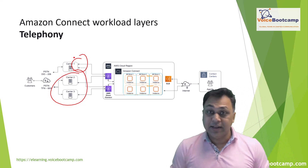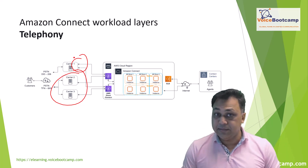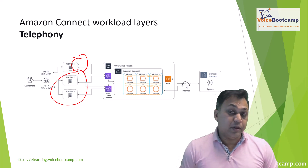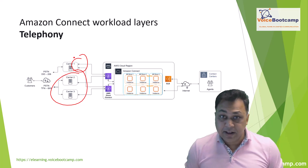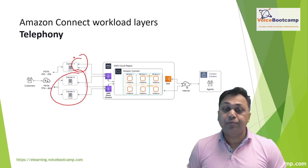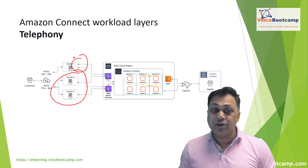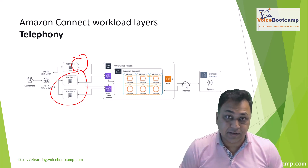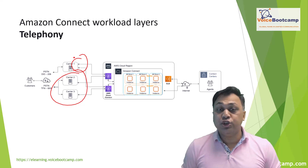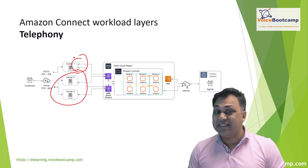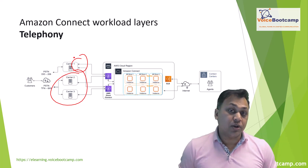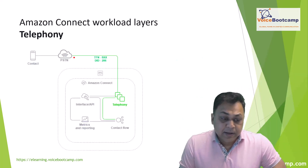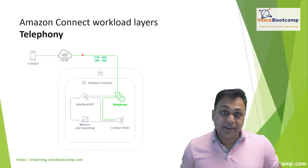If a particular component or even an entire availability zone experiences a failure, the affected endpoint is taken out of rotation so it does not affect your performance. This allows you to continue providing a consistent quality of experience to your customers. From a telephony perspective, telephony is the biggest part of your contact center — it is the path where calls come in and go out.